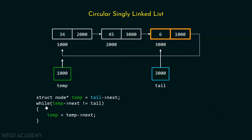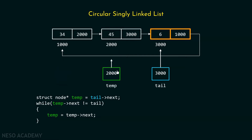That is why this piece of code is required: while temp->next is not equal to tail, temp equals temp->next. Here, we are checking this condition. If temp->next is not equal to tail, then we get inside and move the temp pointer. When temp->next becomes tail, then we should stop.